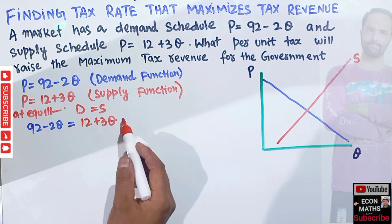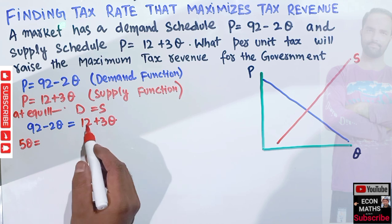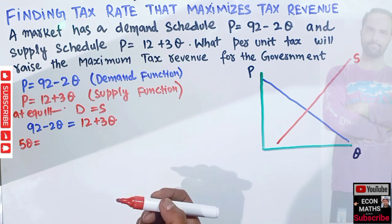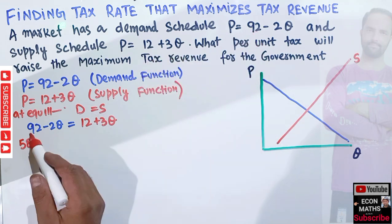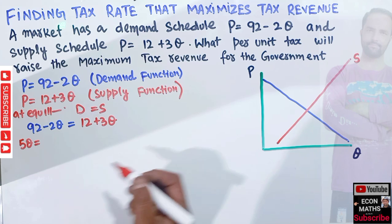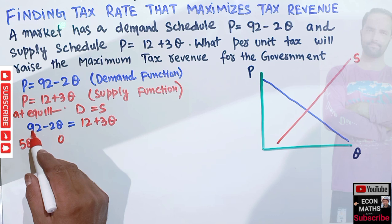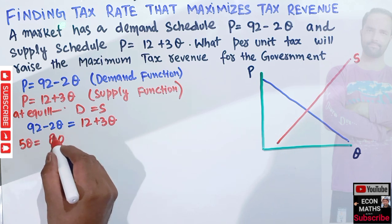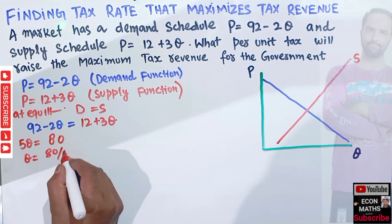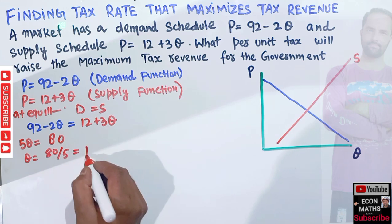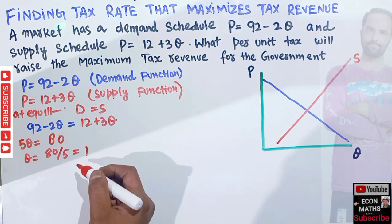Solving for Q: transposing 2Q gives us 2Q + 3Q = 5Q. Then 5Q = 92 - 12 = 80, so Q = 80/5 = 16. The initial equilibrium quantity is 16.